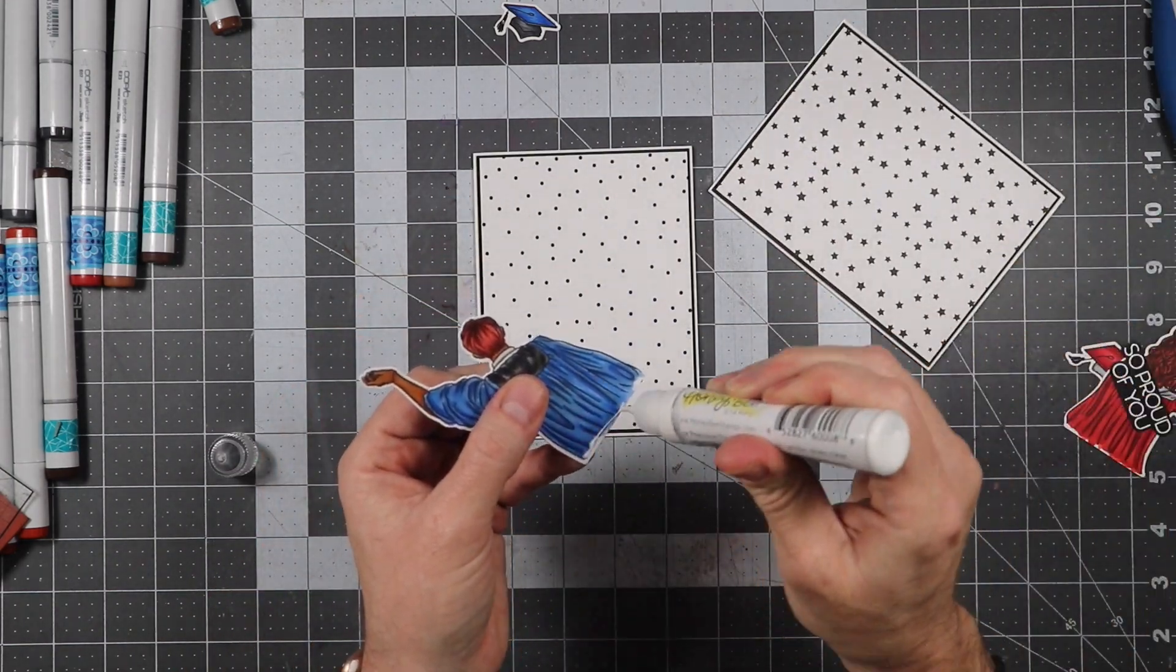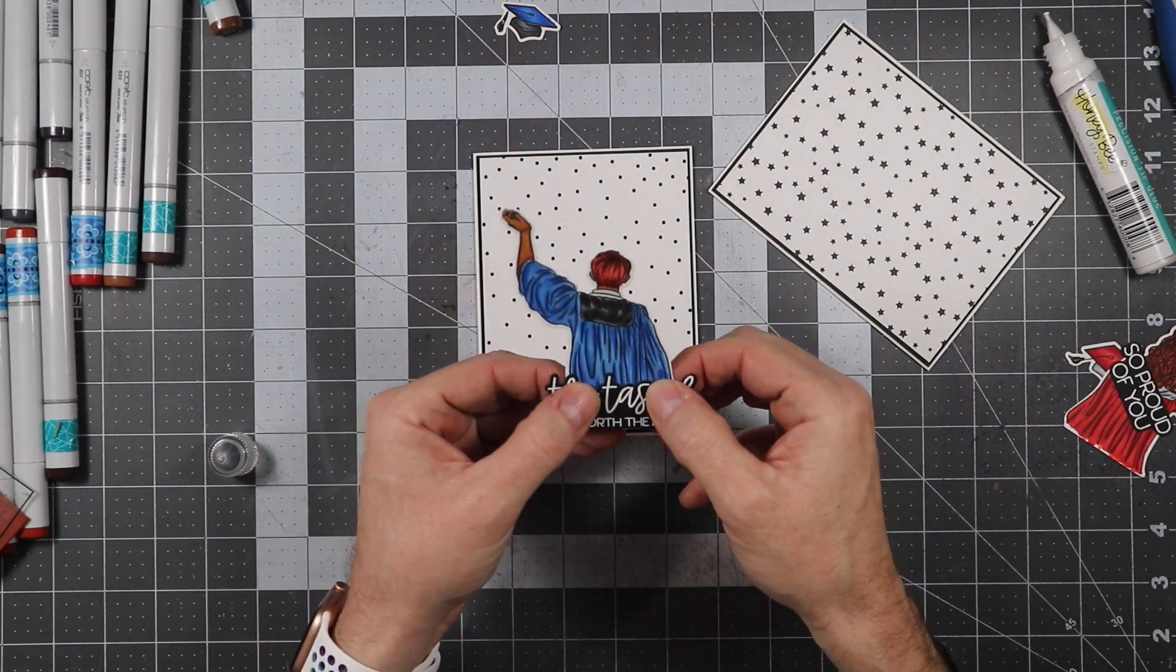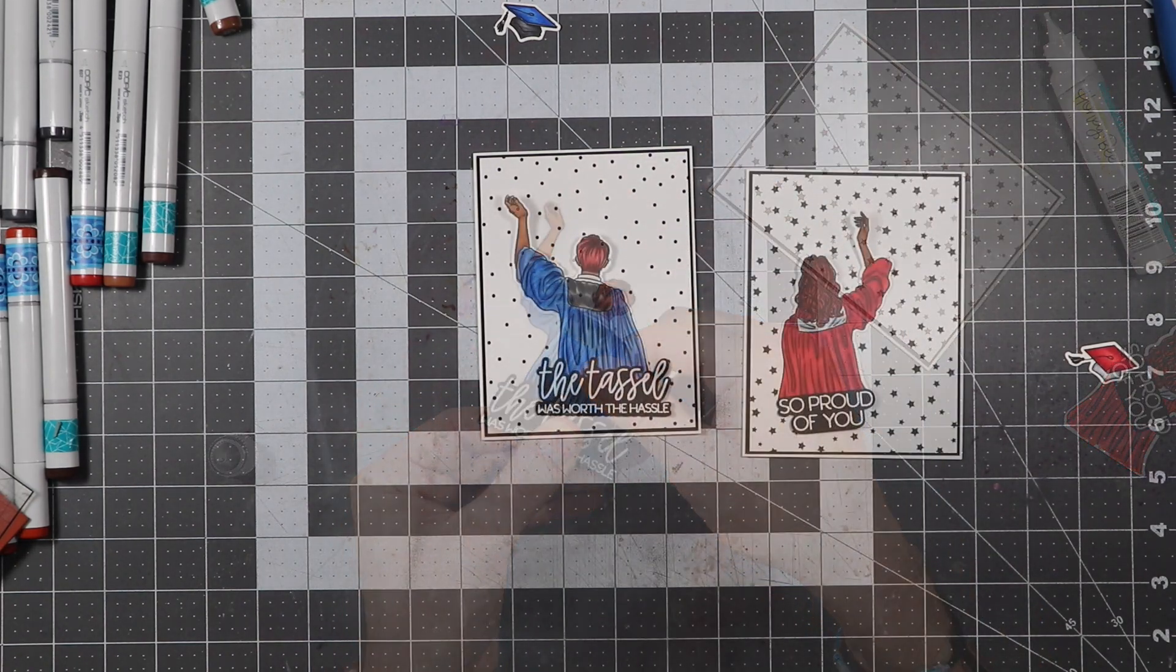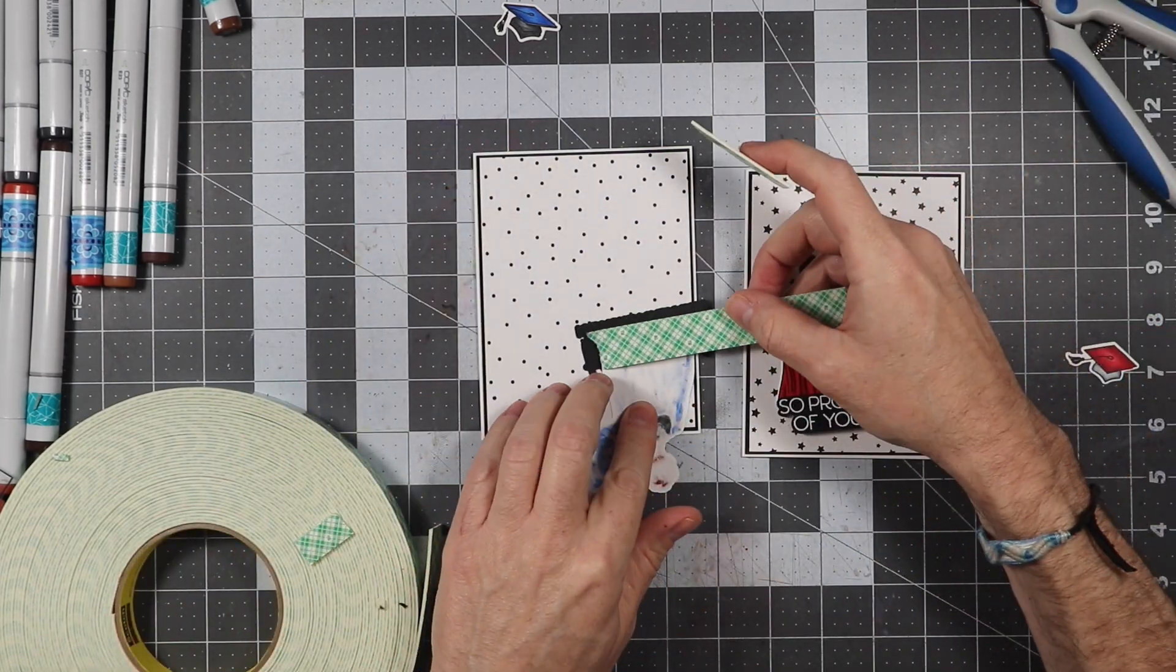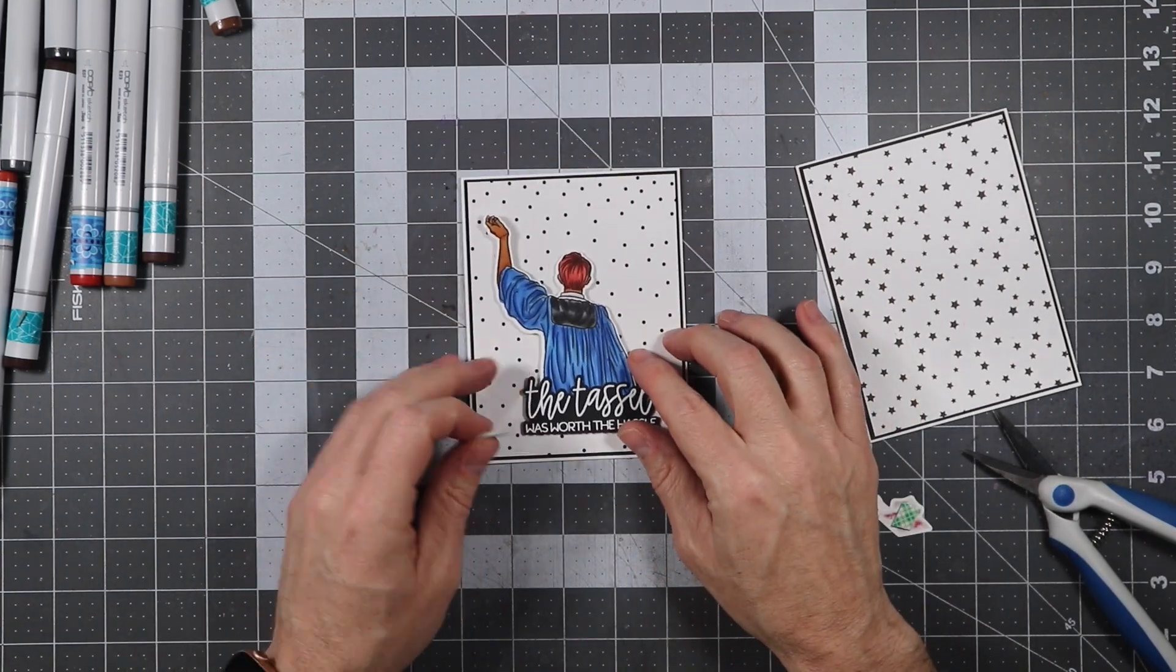So what I decided to do on this card was glue the sentiment to the bottom of the boy here. And then what I'm going to do is use some 3M foam tape, and I'm going to place him up on the card along with the hat as well. And I'll be doing the same process for the red and the blue.